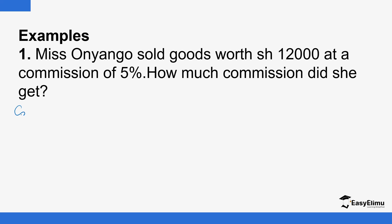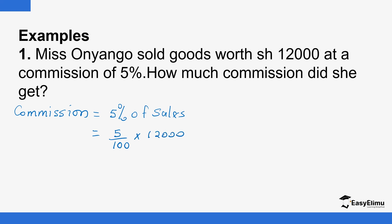Commission in this case will be 5% of total sales. 5% means 5 over 100, so you multiply by 12,000. This zero cancels this zero, this one cancels this one. 5 times 12 is 60, then you add one zero. So the commission is 600 shillings.